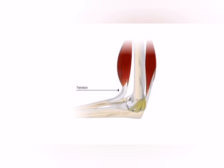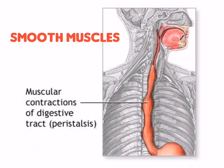Skeletal muscles are voluntary muscles. The smooth muscles control the parts of your body that keep your body functions going. You do not control these muscles as they work involuntarily. For example, smooth muscles in the digestive system contract and expand to help you digest the food.